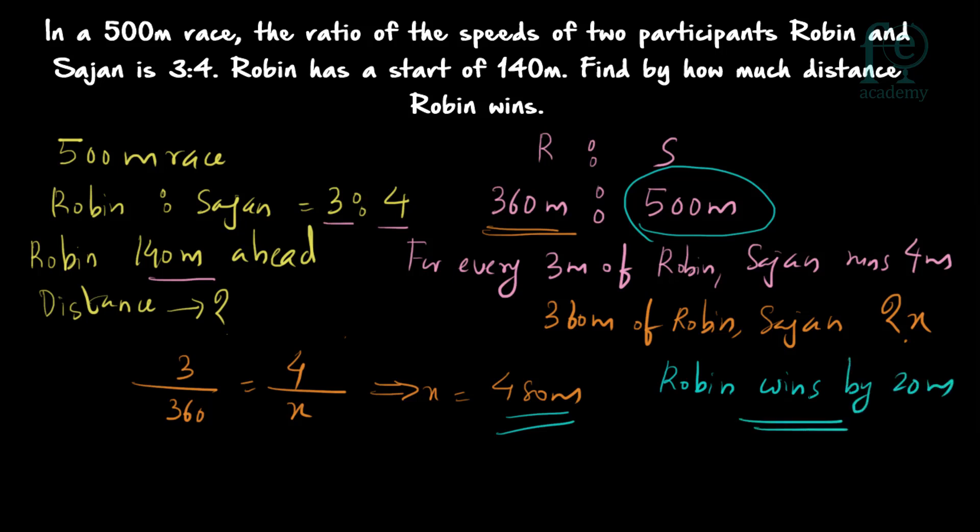So Robin wins by 20 meters. To recap: by the time Robin completes the race, what is the distance run by Sajan? Robin completes the race by running 360 meters. When Robin runs 360 meters, Sajan runs 480 meters. We find this using the speed ratio of Robin and Sajan — assuming time is constant, we convert the speed ratio to a distance ratio. For every 3 meters of Robin, Sajan runs 4 meters. So when Robin runs 360 meters, Sajan's distance is 480 meters, and from there we find Robin wins by 20 meters.